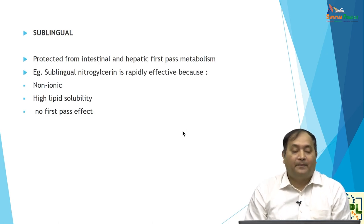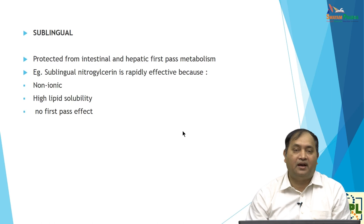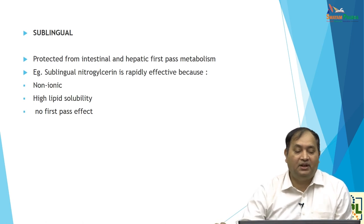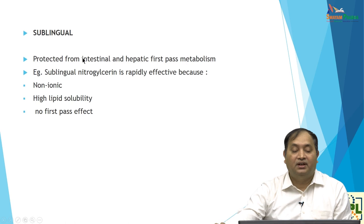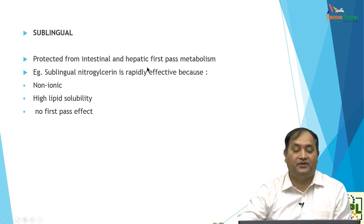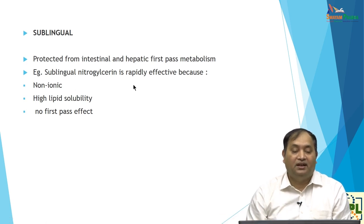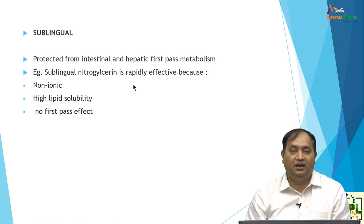For drugs with high first-pass metabolism, you can consider giving sublingually or transdermally. Sublingual absorption bypasses intestinal and hepatic first-pass metabolism. For example, sublingual nitroglycerin is in non-ionic form, has high lipid solubility, so there is no first-pass effect and you get an immediate effect. This is the example of nitroglycerin used in MI — it is a potent vasodilator.